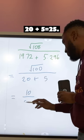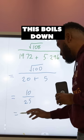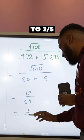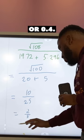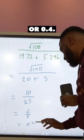20 plus 5 is 25. This works out to 2 out of 5, which equals 0.4.